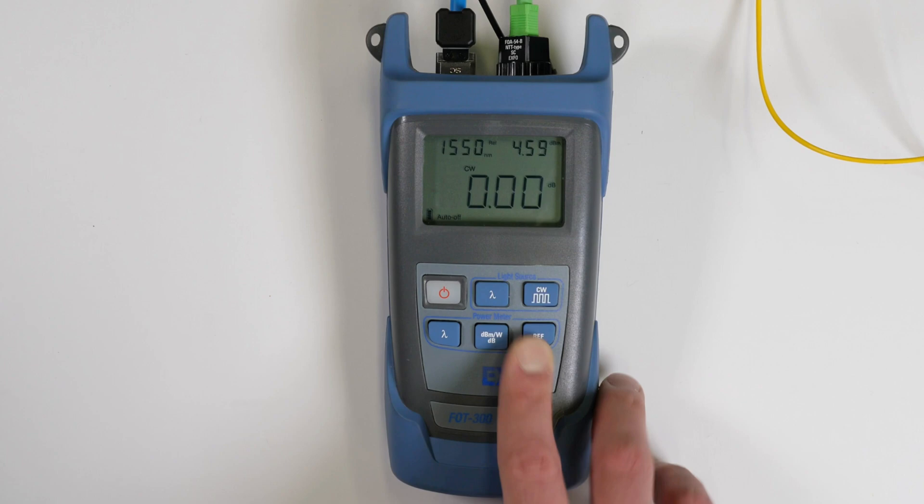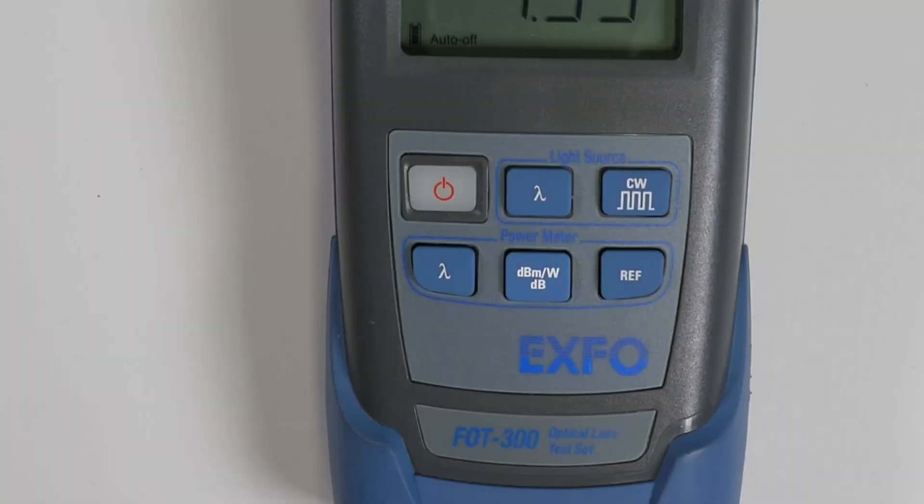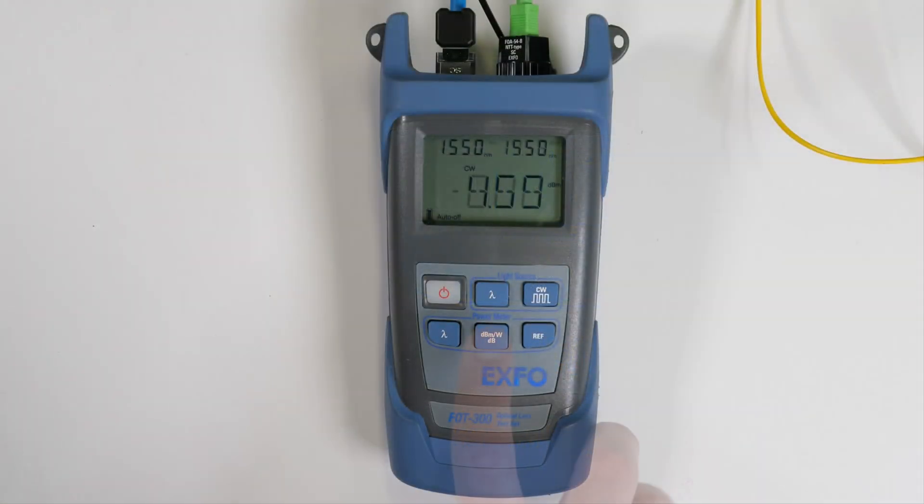Repeat this process for each wavelength you want to reference. Press the dB touch button to switch between displaying power in dBm or loss in dB.